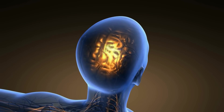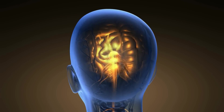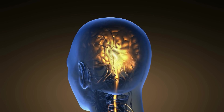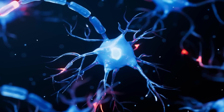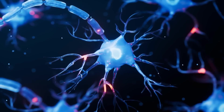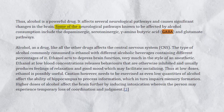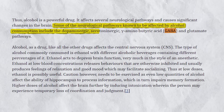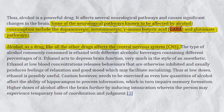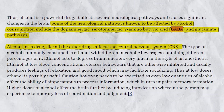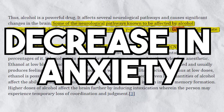Ethanol acts as a central nervous system depressant, meaning that it slows down brain function and neural activity. It achieves this by affecting neurotransmitters, the chemical messengers that transmit signals in the brain. Alcohol enhances the effects of GABA, or gamma-aminobutyric acid, an inhibitory neurotransmitter leading to sensations like sedation, relaxation, and a decrease in anxiety.